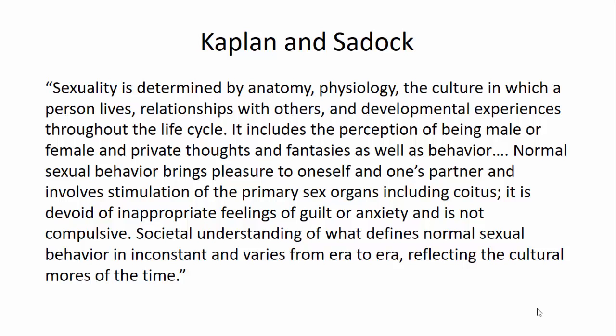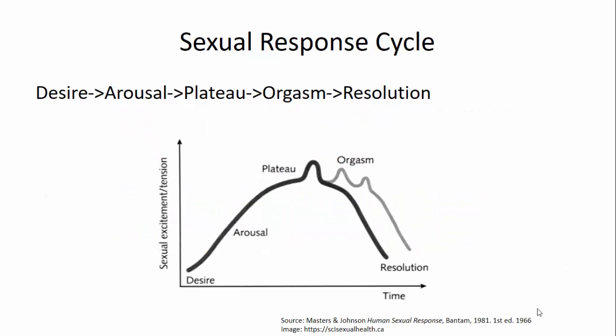Normal sexual behavior brings pleasure to oneself and one's partner and is devoid of inappropriate feelings of guilt or anxiety and is not compulsive. Societal understanding of what defines normal sexual behavior is varied from era to era and reflects the culture of the time. Looking at the normal sexual response cycle, developed by Masters and Johnson in the 1960s, we move through the stages from desire to arousal, plateau, orgasm, and resolution, with sexual excitement on the y-axis and time on the x-axis.